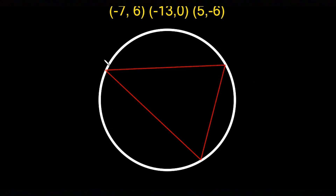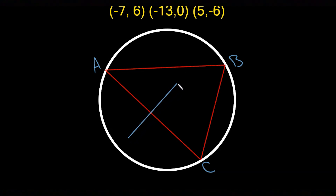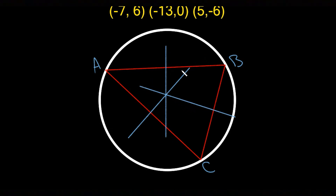So for example, if you have point A here, point B here, and point C here, and we were to draw perpendicular bisectors going through these line segments, we would have something like this — a line segment here, one here, and another one right here. The property is: whenever you draw in these perpendicular bisectors, the point of intersection between them will always be the center of the circle.